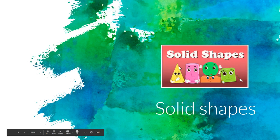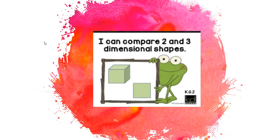Today we're going to talk about solid shapes. It says I can compare two and three dimensional shapes. Remember we've talked about 2D shapes and 3D shapes, and today we're going to talk about the differences between the two.